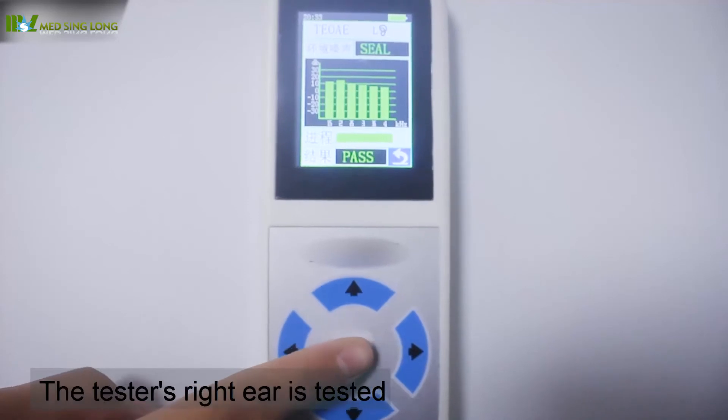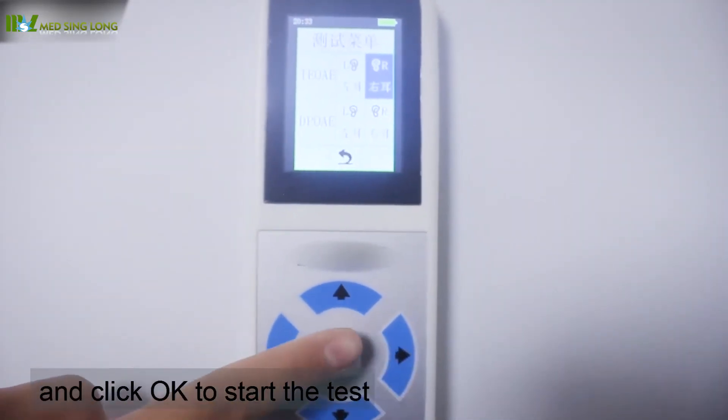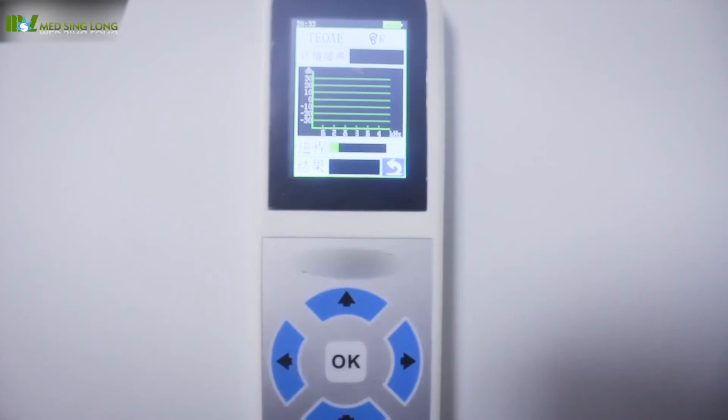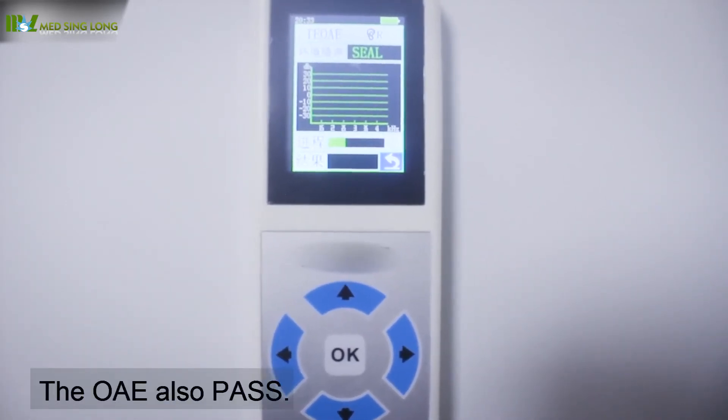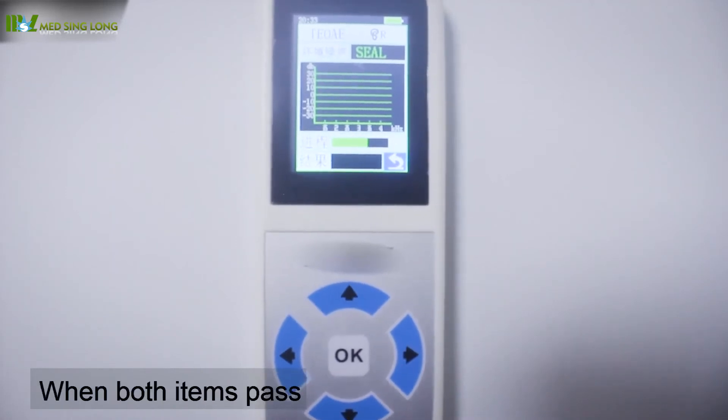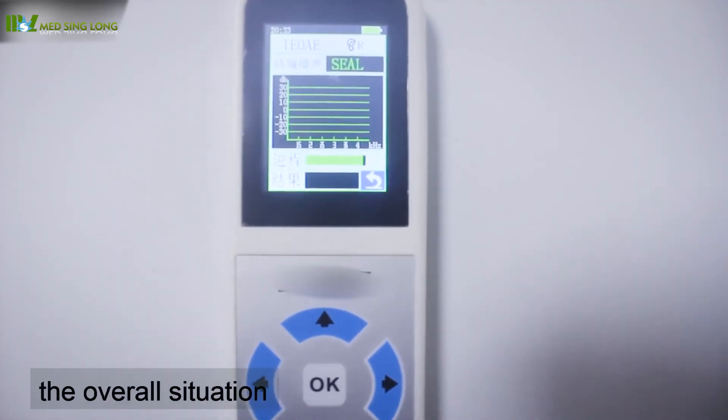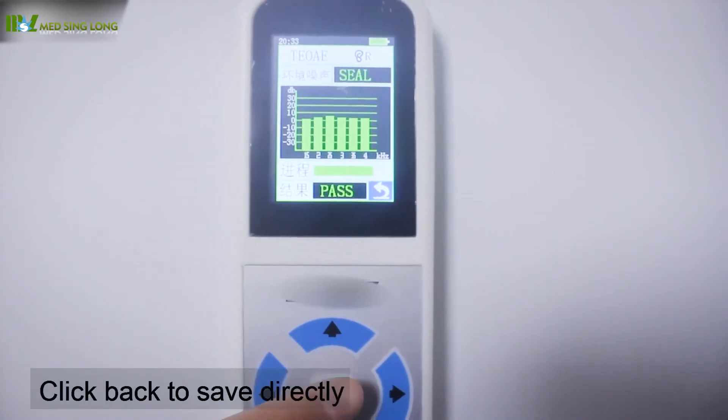The tester's right ear is tested. Click OK to start the test. Ambient noise display passes. When both items pass, the overall situation will be displayed. Click back to save directly.